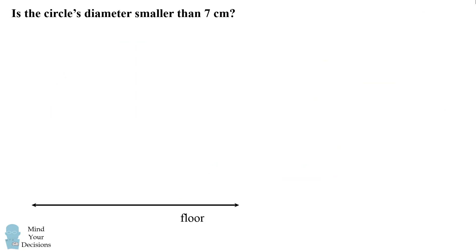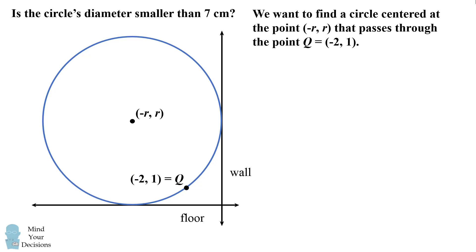We'll use the same approach. We'll have the floor on the x-axis and the wall on the y-axis. We have a circle that's passing through point q, which will be (-2, 1). There's one more thing we know about the circle. It's tangent to the floor and the wall. So we can draw a square as such. And each of these dimensions will be one radius of the circle. So one radius left of the wall will be (-r, 0). And one radius above the floor will be (0, r). This will be the circle's center at (-r, r). We want to find a circle centered at the point (-r, r) that passes through the point q, which equals (-2, 1).